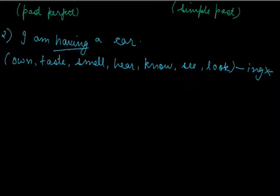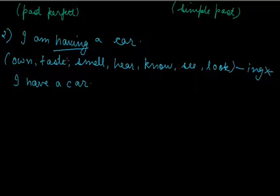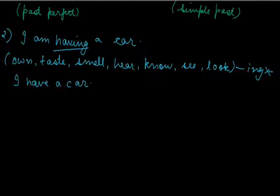I'm having a car directly means I'm owning a car. So it's better to write I have a car or I own a car rather than I'm having a car. Words like own, taste, smell, hear, know, see, look are not followed by -ing if they are not used with a preposition or something else.